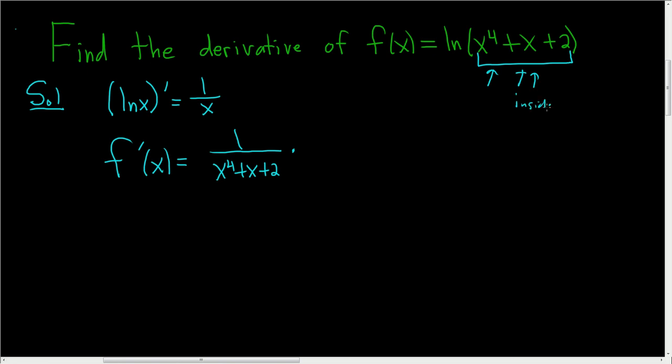This is the inside. And the derivative of the inside, let's see, the derivative of x to the fourth using the power rule is 4x cubed. The derivative of x is 1, so just plus 1.